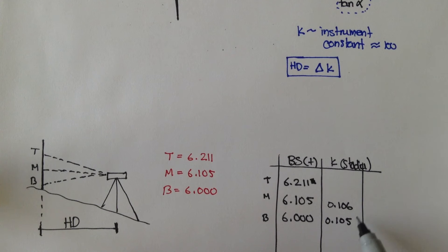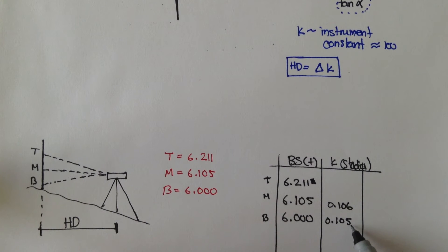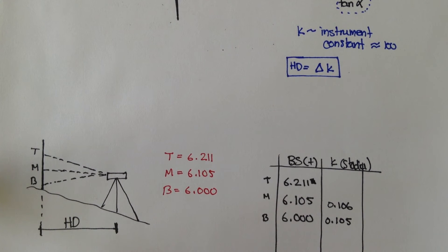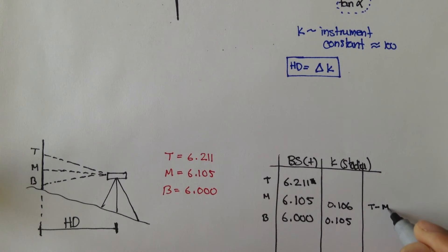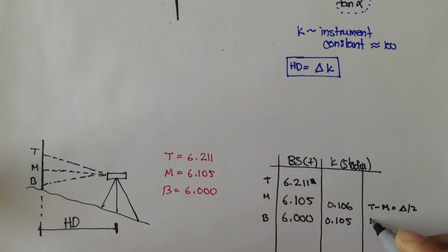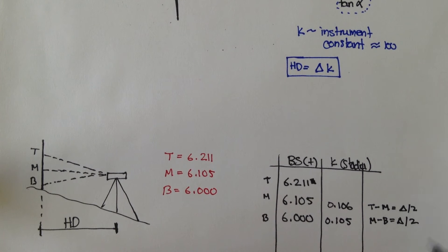These stadias are only different to the third decimal place, so that's pretty good. It's pretty accurate considering we're only using our human eye to take the measurement. Top minus middle equals the half stadia, and middle minus bottom equals the half stadia.